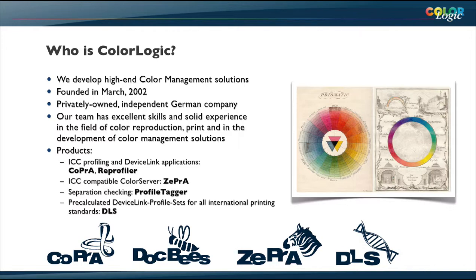For example, if you have a newspaper print and you have a CMYK image that has 330% of ink in there, you will have a big problem when you print that file. Therefore, you have to check those things.